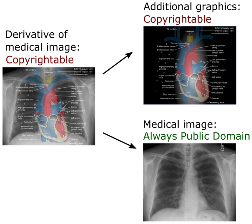CC provides an author flexibility — for example, he or she might choose to allow only noncommercial uses of a given work — and protects the people who use or redistribute an author's work from concerns of copyright infringement, as long as they abide by the conditions specified in the license. There are several types of Creative Commons licenses.